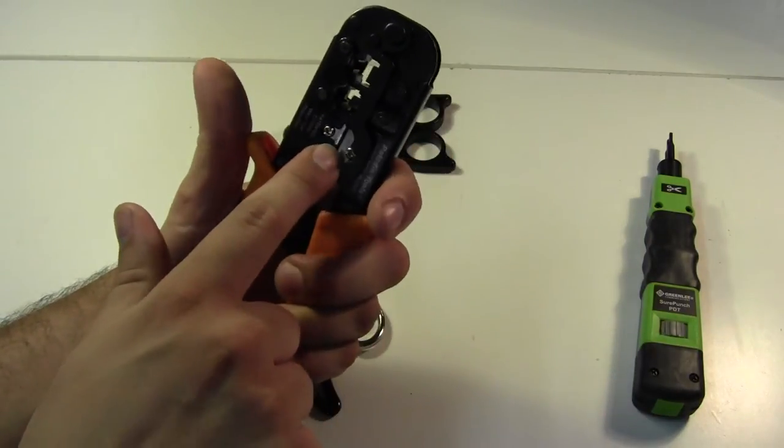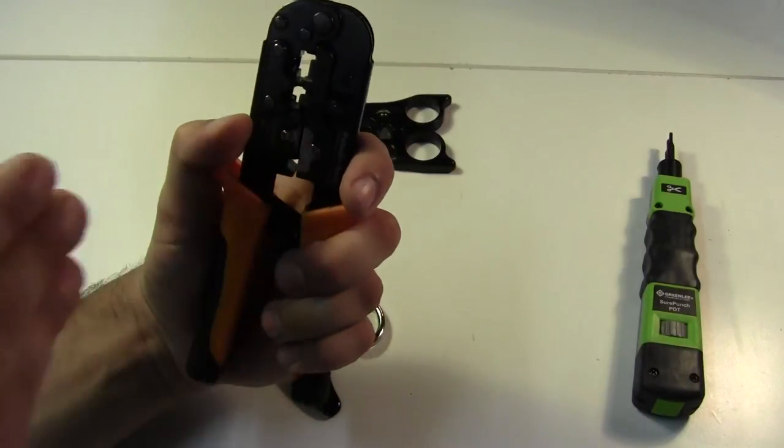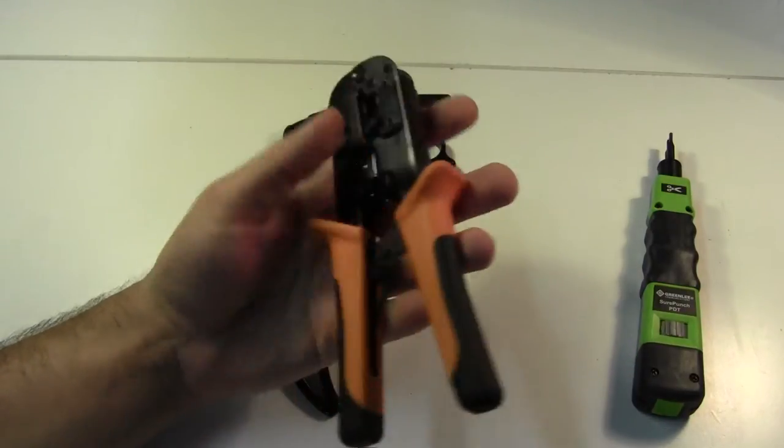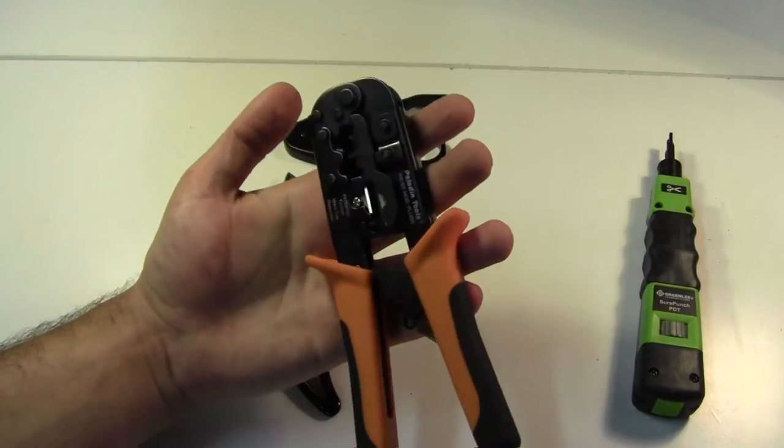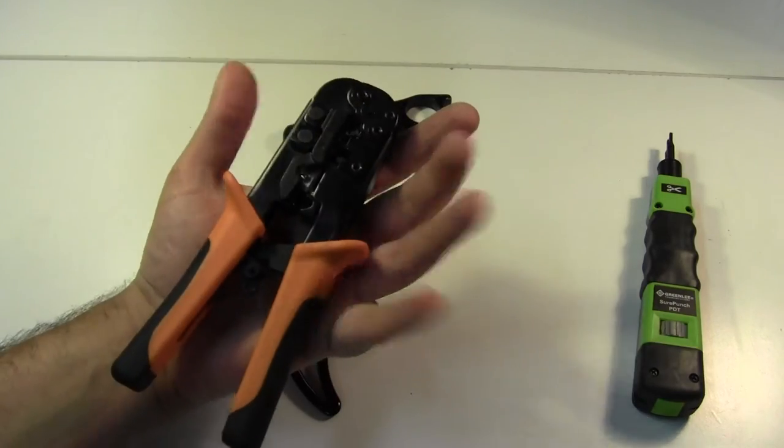And then on this side it actually has silver satin strippers. So those flat cables, you can put them in there, grab it, and pull it out, and it's stripped. Nice ratchet action. This has been my bread and butter. I've been using this one for about three years now, because I've really been beating the tar out of this thing, and I really like it.